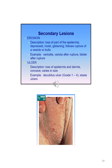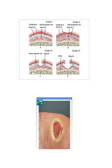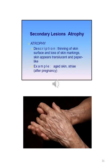An erosion is a loss of part of the epidermis; it's depressed, moist, and glistening and follows the rupture of a vesicle or bulla. Examples include varicella or variola after rupture or a blister after rupture. An ulcer is loss of epidermis and dermis, concave and varies in size. Examples include a decubitus ulcer and a stasis ulcer. Atrophy is thinning of the skin surface and loss of skin markings; the skin appears translucent and paper-like. Examples include aged skin and striae, which can occur after pregnancy.